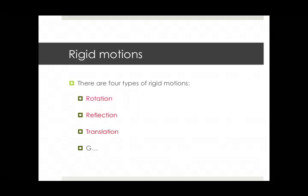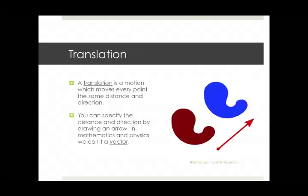They are rotations and reflections. And the third type that we're about to learn about is called translation. There's a fourth type beginning with the letter G, but we'll learn about that in another lecture. So, translation. What is a translation? A translation is a motion which moves every point the same distance and direction.